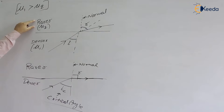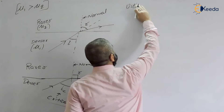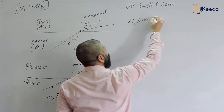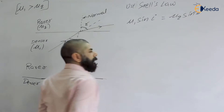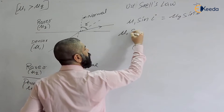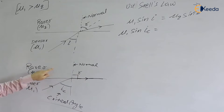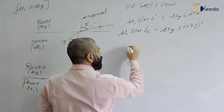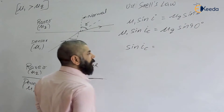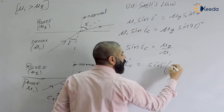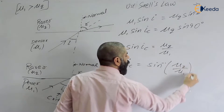To calculate the critical angle, we use Snell's law. Snell's law states: mu1 × sin(i) = mu2 × sin(r). When the angle of incidence is the critical angle ic, the angle of refraction is 90 degrees. So: mu1 × sin(ic) = mu2 × sin(90°) = mu2 × 1. Therefore, sin(ic) = mu2 / mu1, and the critical angle is ic = sin⁻¹(mu2 / mu1).